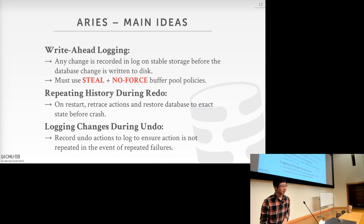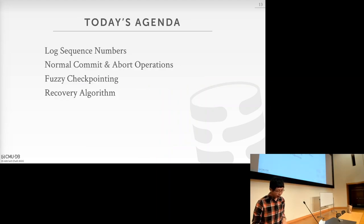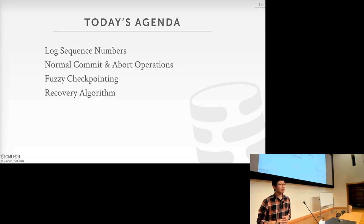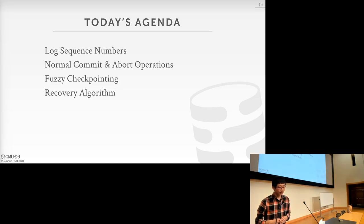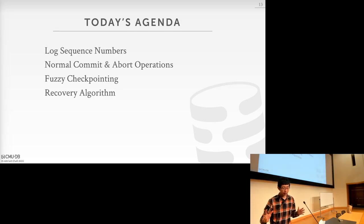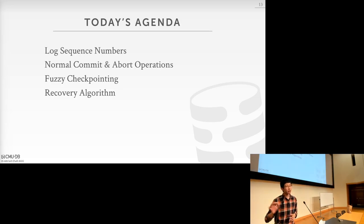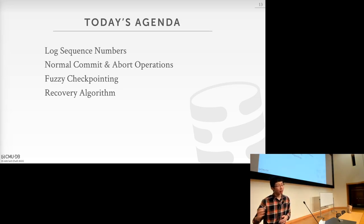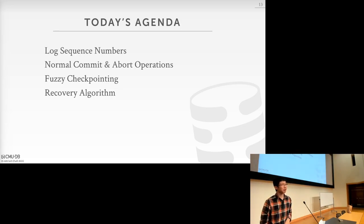One thing to note: in the redo phase, we just reapply all the changes. But in the undo phase, we actually need to record what values we have undone as additional log records. We want to know what things we have restored and what we have not, especially in case there's a crash while you are trying to recover — a recursive crash scenario. After coming back in that case, we need to know what undo we've done and what we haven't, to help resolve it correctly. Today's agenda: first, establish concepts and metadata — especially log sequence numbers — then discuss commit and abort operations, then an optimized checkpointing version, and finally the ARIES recovery algorithm.